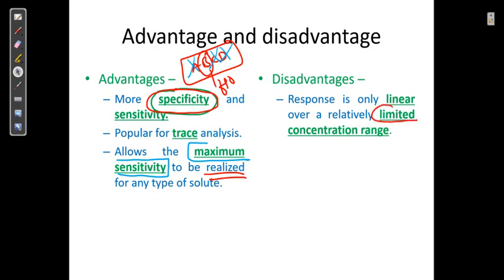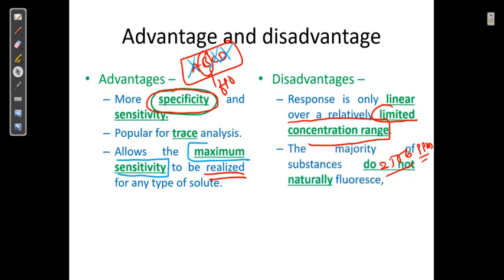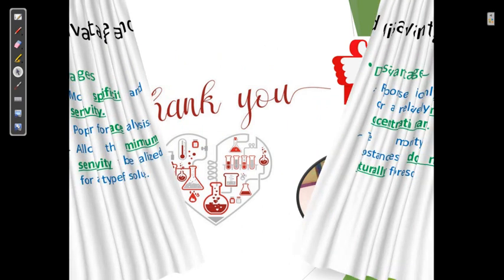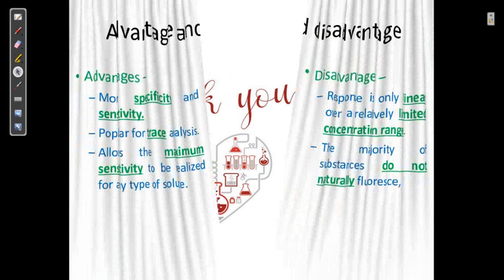The disadvantages of the fluorescence detector: the response is linear only over a relatively limited concentration range. Also, the majority of compounds are not naturally fluorescent, which is a significant limitation for HPLC detector use.